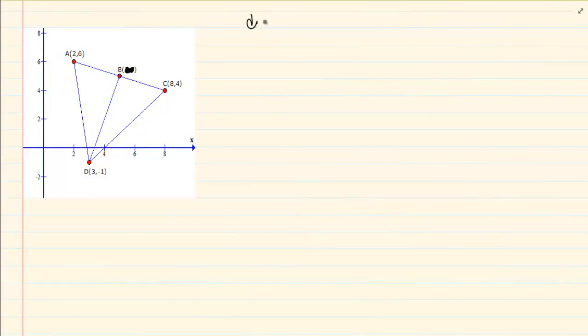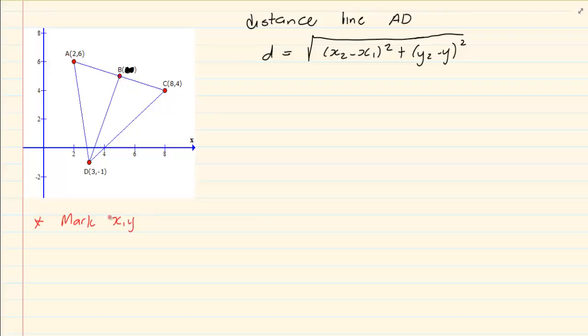What I would like to know is how to calculate the distance of line AD. Now distance is equal to the root of x2 minus x1 all squared plus y2 minus y1 all squared. Now analytical works on three basic rules. Basically you are going to mark your x1 y1 and your x2 y2. Then you are going to substitute into the correct formula and you are going to solve.